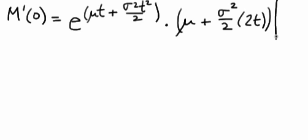And now we need to evaluate that whole function at t equals 0. Putting a 0 into the first term, we get e to the 0 plus 0 gives e to the 0, which is of course just 1,